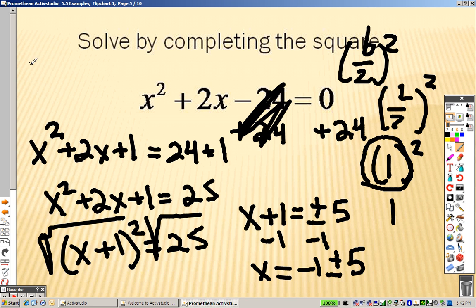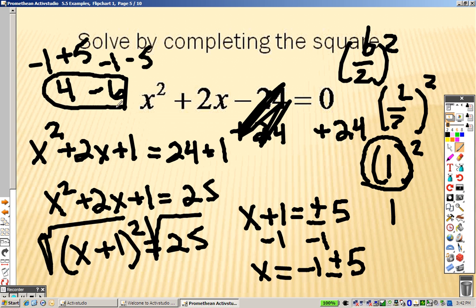So, negative 1 plus 5, the answer is 4. Negative 1 minus 5, the answer is negative 6. So there are your two answers.